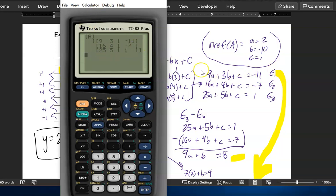So 9, 3, 1, negative 11, 16, 4, 1, negative 7, 25, 5, 1, 1. And I like to do that just to make sure I didn't have a data entry mistake.